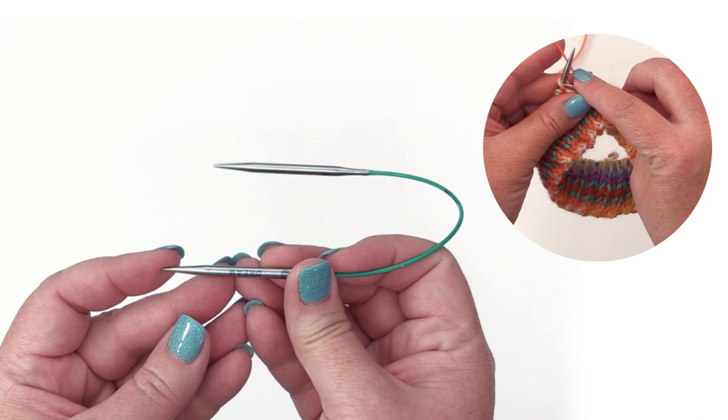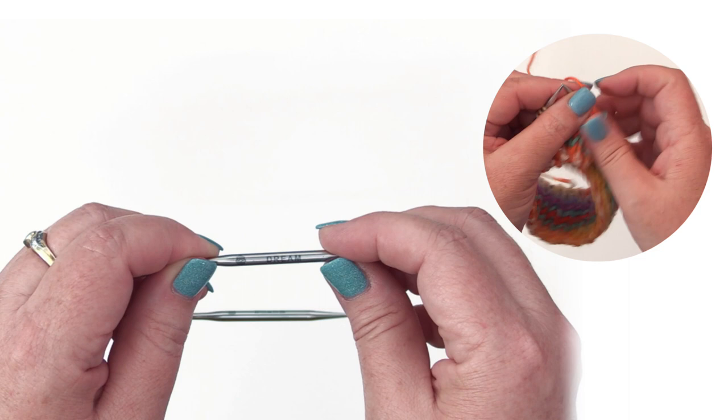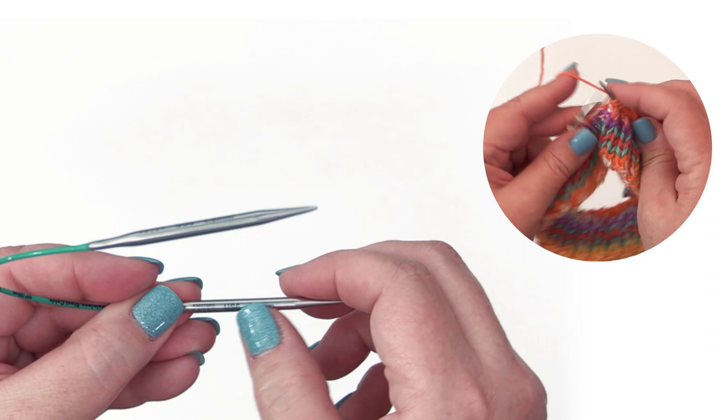Now, when you look at the needles, you will see that on the side printed is an inspirational word, and this is to bring in the concept of meditation while you are knitting. So this one says dream, and each size has a different word printed on it. And when you flip it over, you'll see that it has the size printed on it. So this is a US 6 or a 4 millimeter.